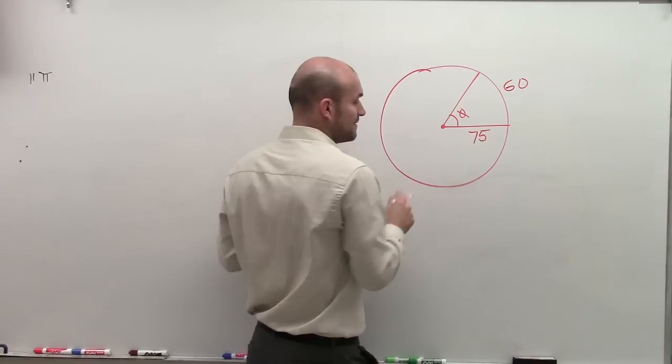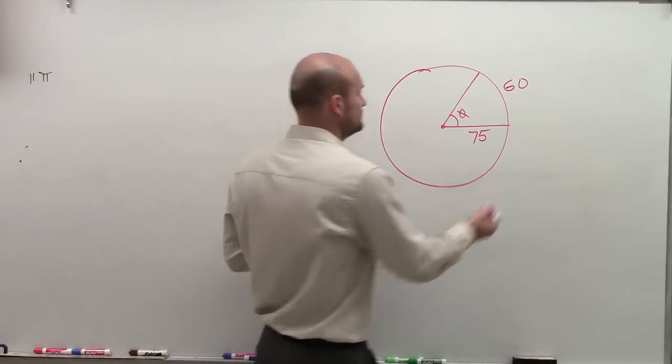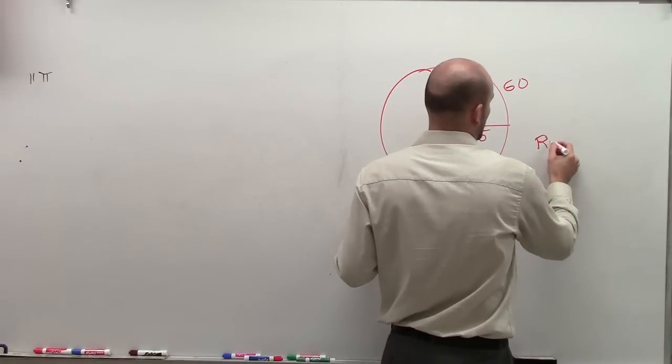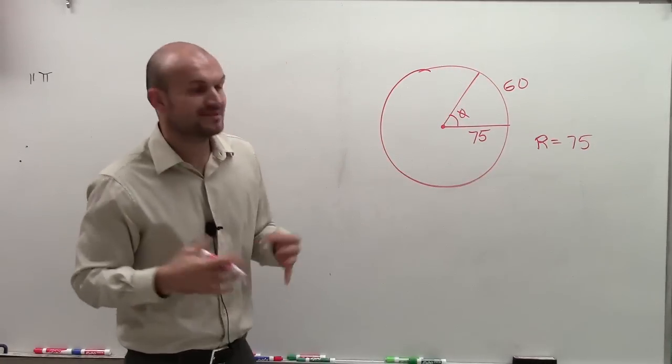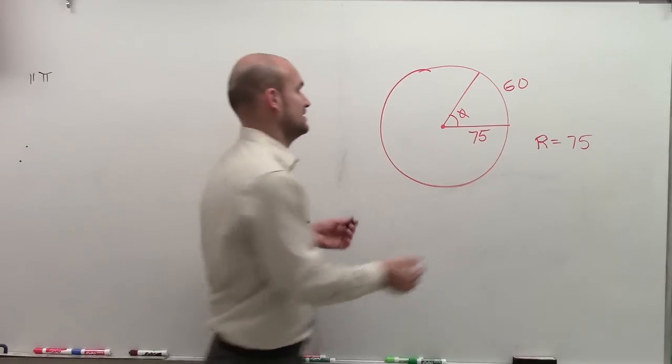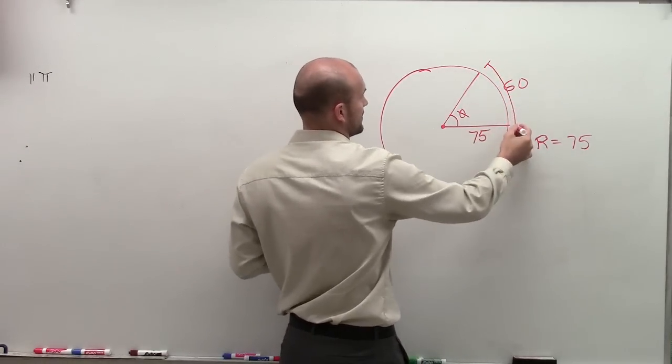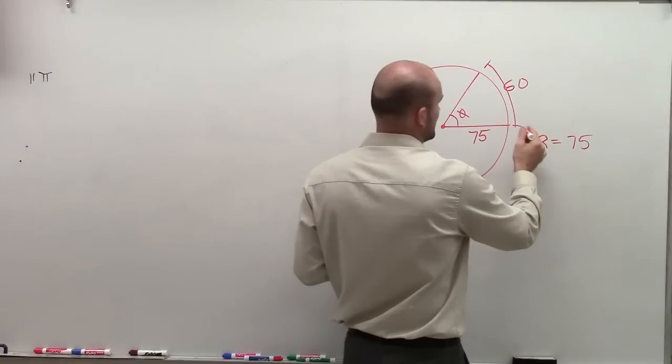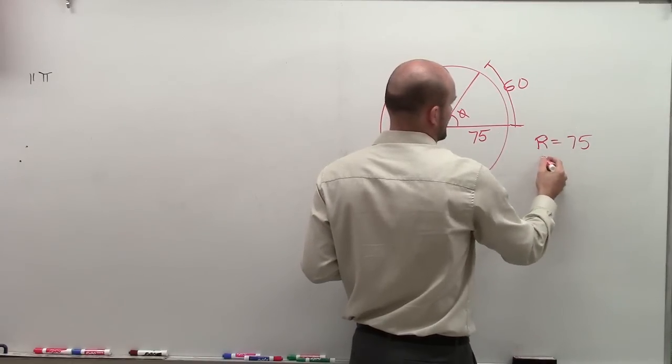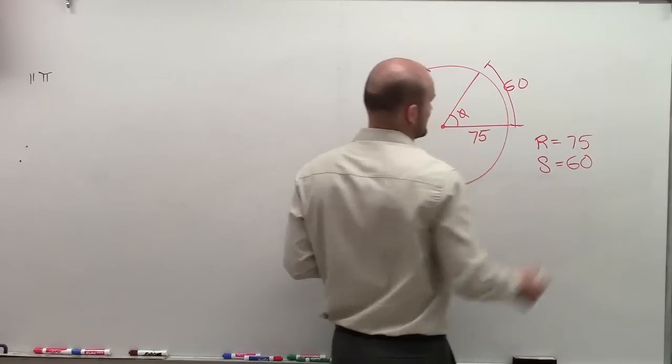So we have 75. 75 is going to represent the radius. So I'm going to say r equals 75. And then in this problem, 60 is going to represent my arc length, the distance here. So 60 equals my arc length, which is going to be s, which equals 60.